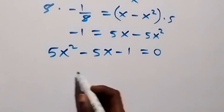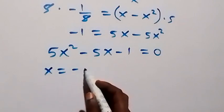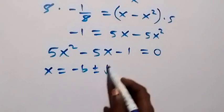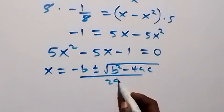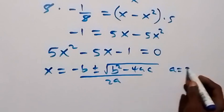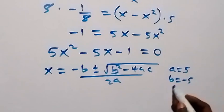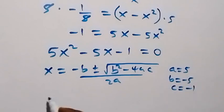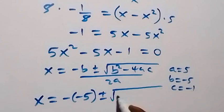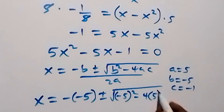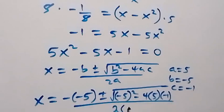This gives us a quadratic equation, which we can solve using the formula: x equals to minus b plus or minus square root of b squared minus 4ac, over 2a. In this case, a equals to 5, b equals to minus 5, and c equals to minus 1. So x now equals to minus of minus 5, plus or minus square root of minus 5 squared, minus 4 times 5 times minus 1, all over 2 times 5.